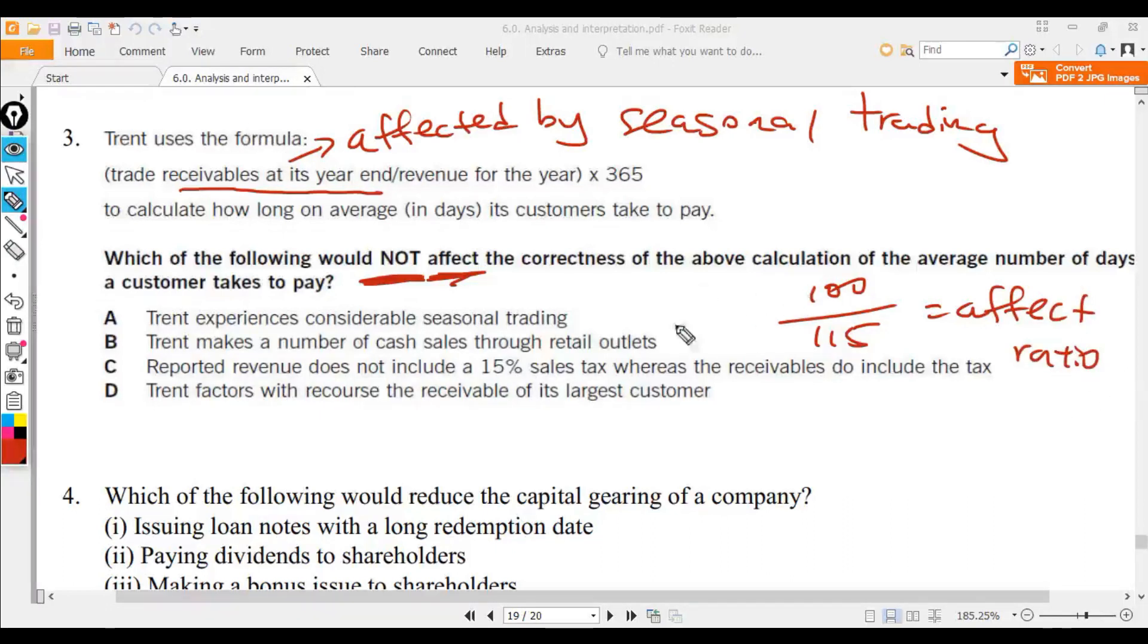Wait, the reverse. It's 115 divided by 100, because your sales doesn't have the sales tax but the receivable has the sales tax.